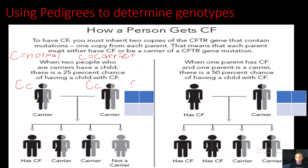So let's go ahead and do a Punnett square on both of them. We have big C, small C for the dad, and big C, small C for the mom. This first one is going to have two big C's — so it's going to be normal. The second one is going to have a big C and a small C — so that's going to be a carrier. This third one is going to have a big C and a small C — so that's going to be another carrier. But then if we look at this fourth one, it actually has two small C's, which lets us know that this individual has cystic fibrosis.